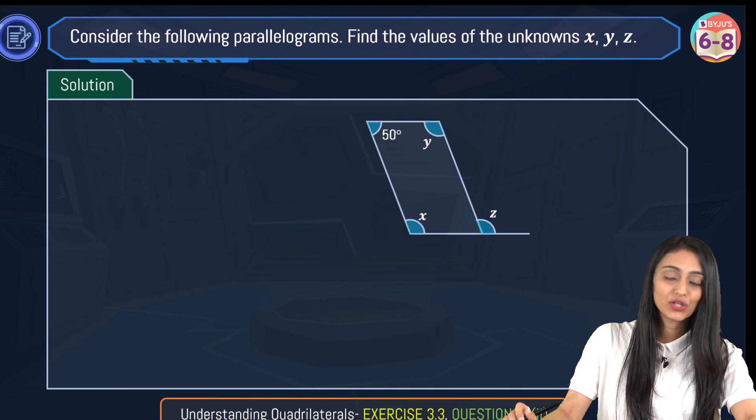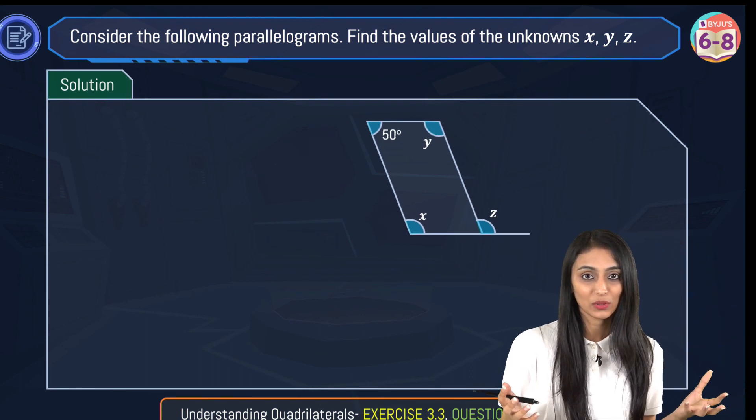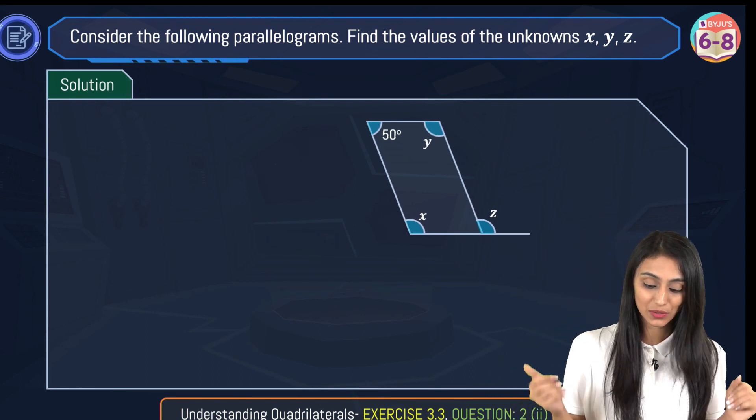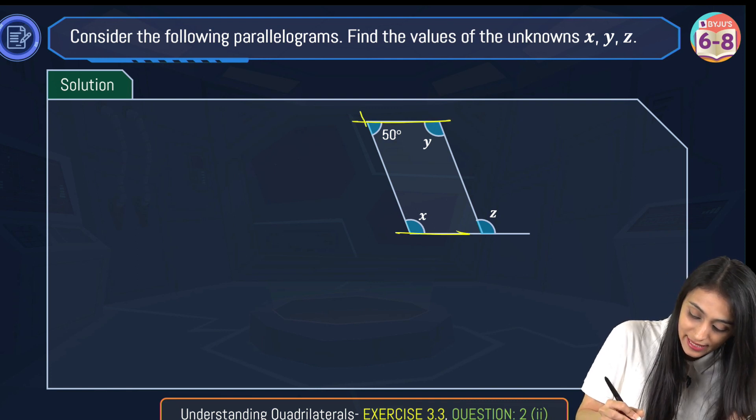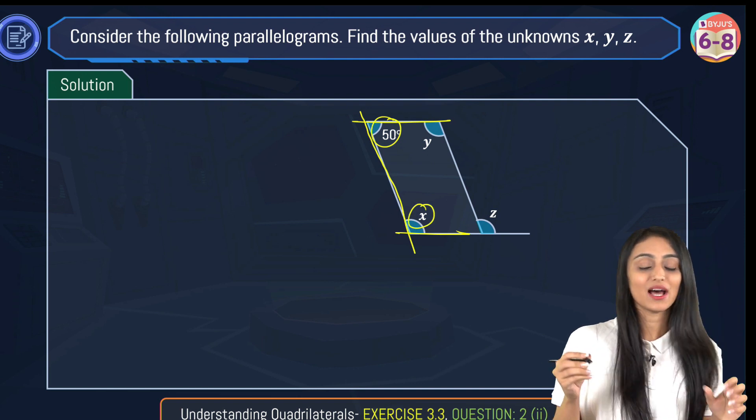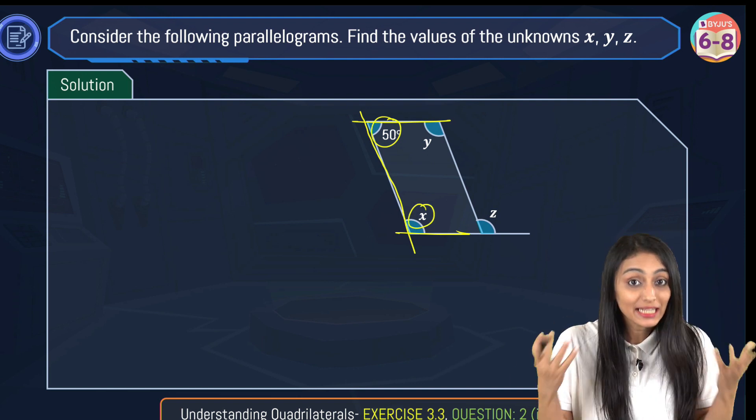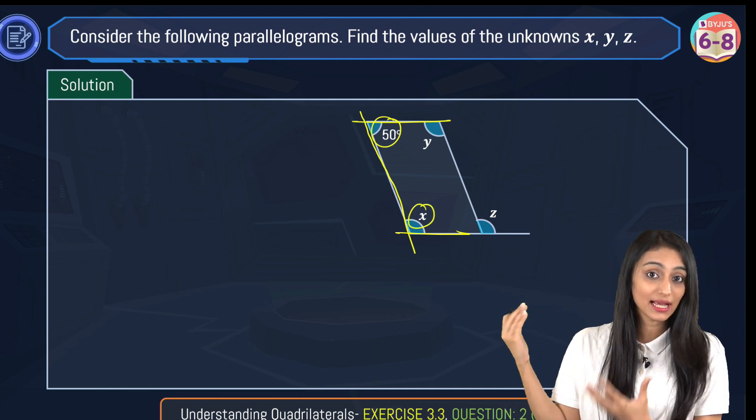What I can see over here is, we know that the opposite sides of a parallelogram are parallel as well as equal. So these are the parallel sides over here. And these angles over here, this 50 degrees and x, these are co-interior angles or these angles are adjacent angles as well.